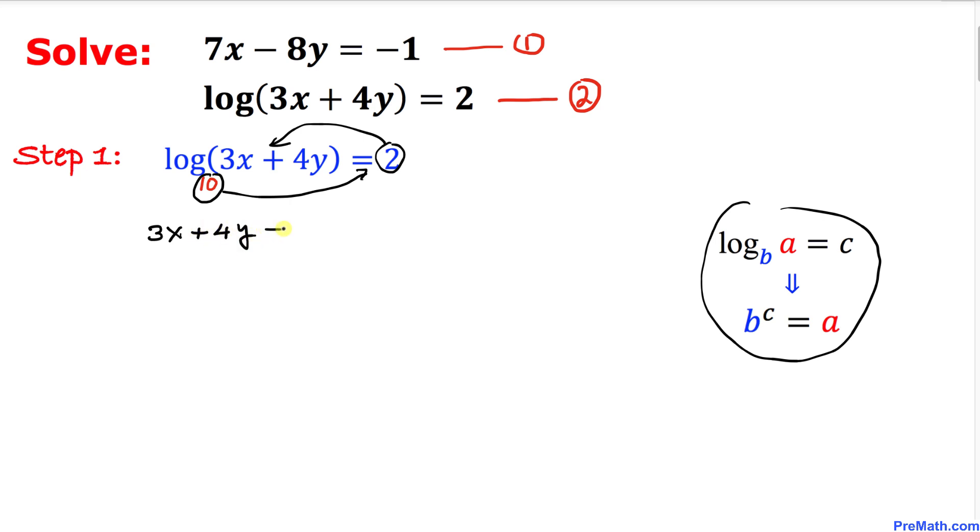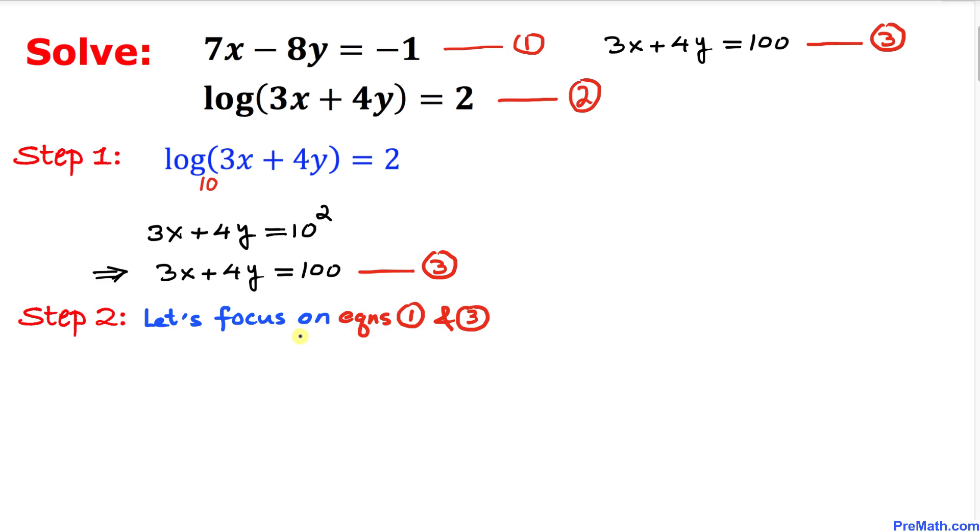3x plus 4y equals 10 power 2. This could be written as 3x plus 4y equals 100. Let me call this equation number 3, and here's our next step.